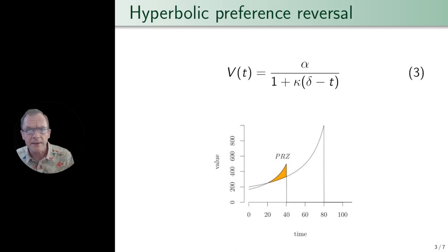Unfortunately, although there's little doubt about the reality of preference reversals, there's no clear evidence that we're aware of which shows this simple hyperbolic model predicting preference reversals at the level of individual participants. And that's what we set out to explore in the current work.